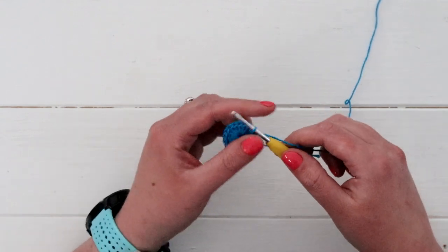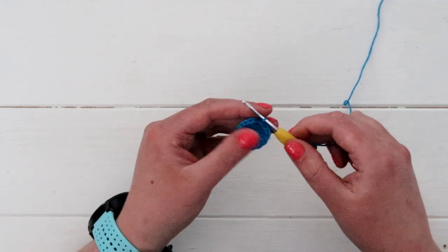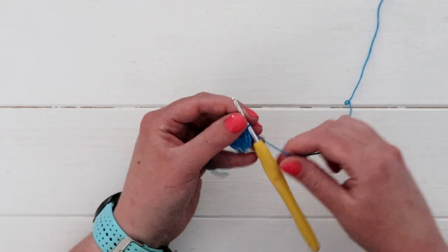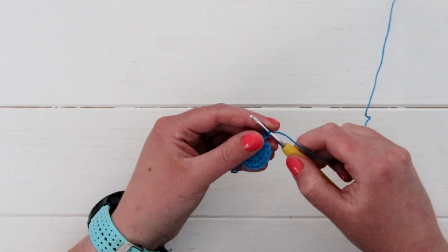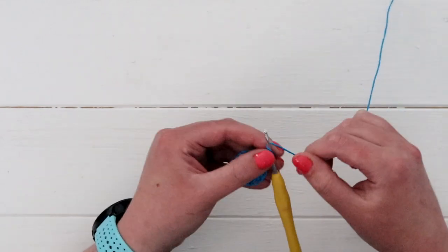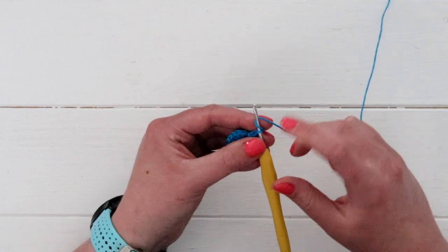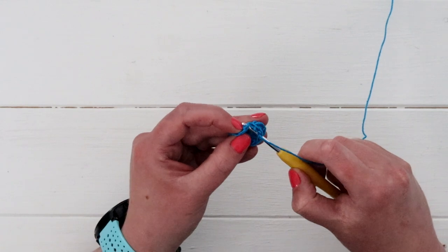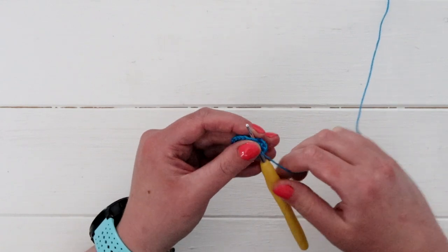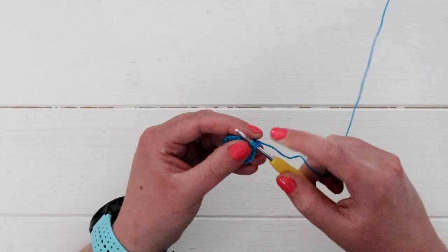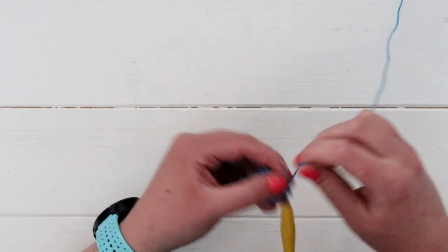But now we're ready for our second round. And this is actually the last round because these are just a super quick project. So you'll begin by chaining two. And we are going to be puff stitching. So to puff stitch, you'll yarn over, put your hook into the first double crochet from the previous round, yarn over, pull through, now you have three loops on your hook.